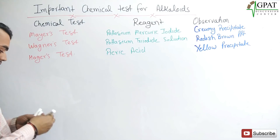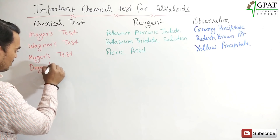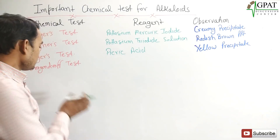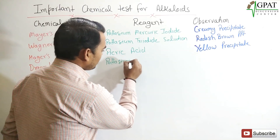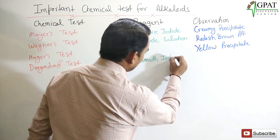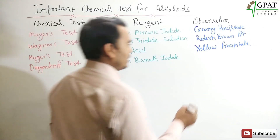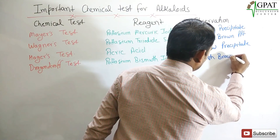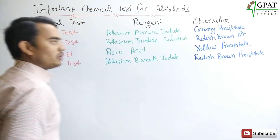The next test is Dragendorff's test. The reagent used in Dragendorff's test is potassium bismuth iodide solution. In the observation, we find a reddish-brown precipitate.